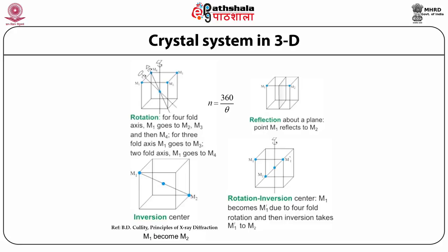Next comes rotation symmetry. The symmetry operations of reflection and inversion produce different sets of objects. However, it is also possible to have a rotational operation relating such objects, called an improper rotation. The corresponding symmetry element is known as an improper rotational axis. There exist two improper rotations: rotoreflection and rotoinversion. For a four-fold axis, M1 goes to M2, M3 and then M4. For a three-fold axis, M1 goes to M3, and for a two-fold axis, M1 goes to M4.